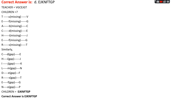So for 'children': C is coded by E, H is coded by J, I is coded by K, L is coded by N, D is coded by F, R is coded by T, E is coded by G, and N is coded by P. So the code for 'children' is EJKNFTGP. The correct answer is option D.